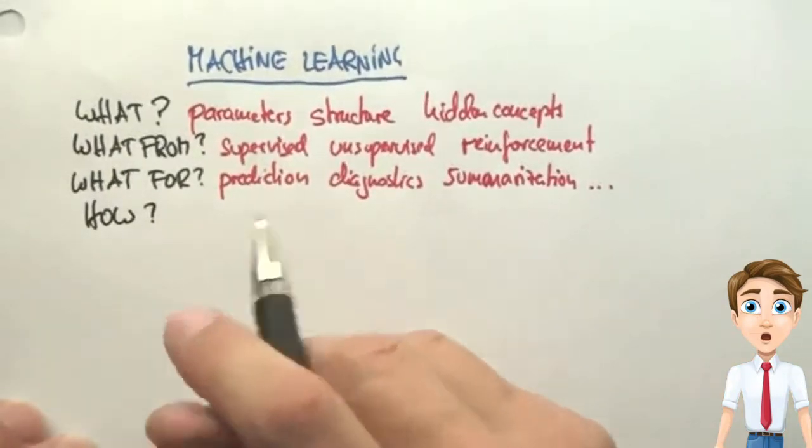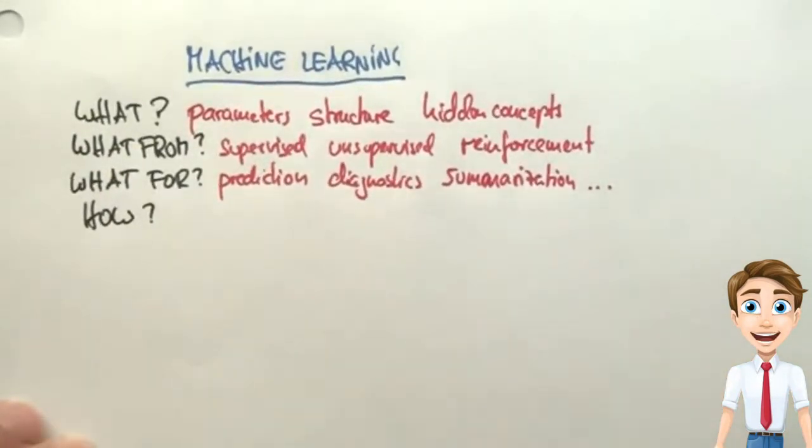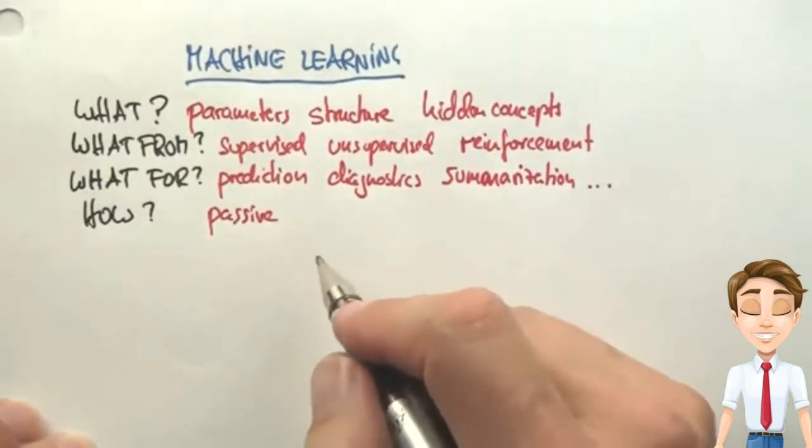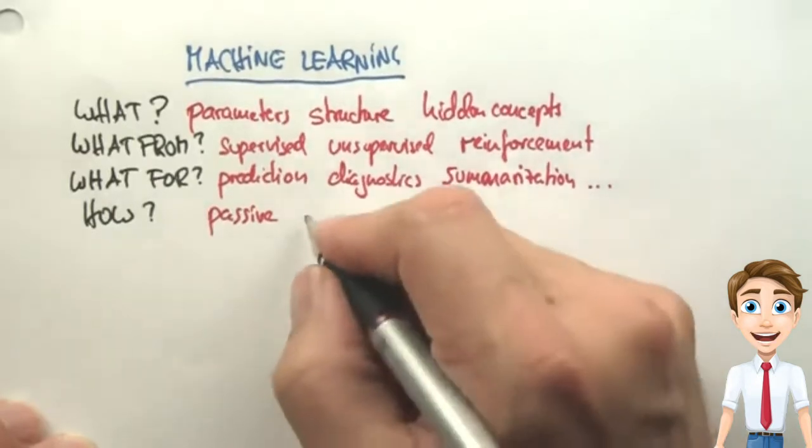You can talk about the how to learn. You use the word passive if your learning agent is just an observer and has no impact on the data itself. Otherwise we call it active.